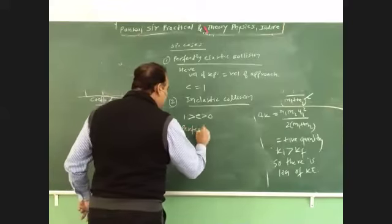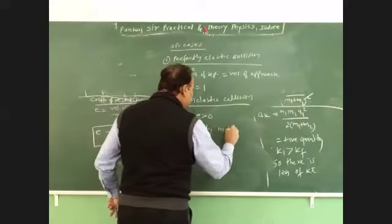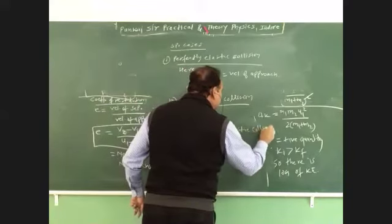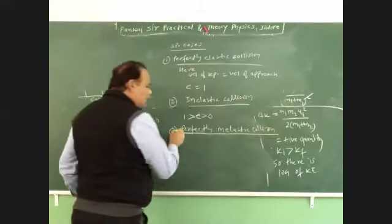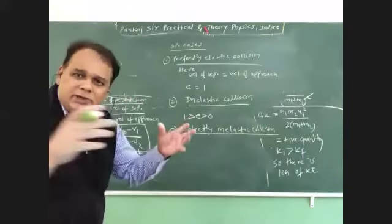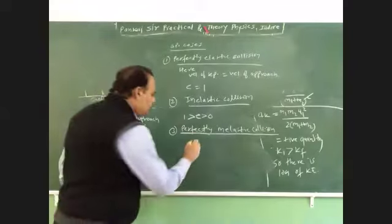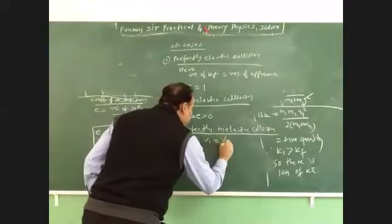And in perfectly inelastic collision, in perfectly inelastic collision, it means final velocity of both the body is the same. V1 and V2 are the same.